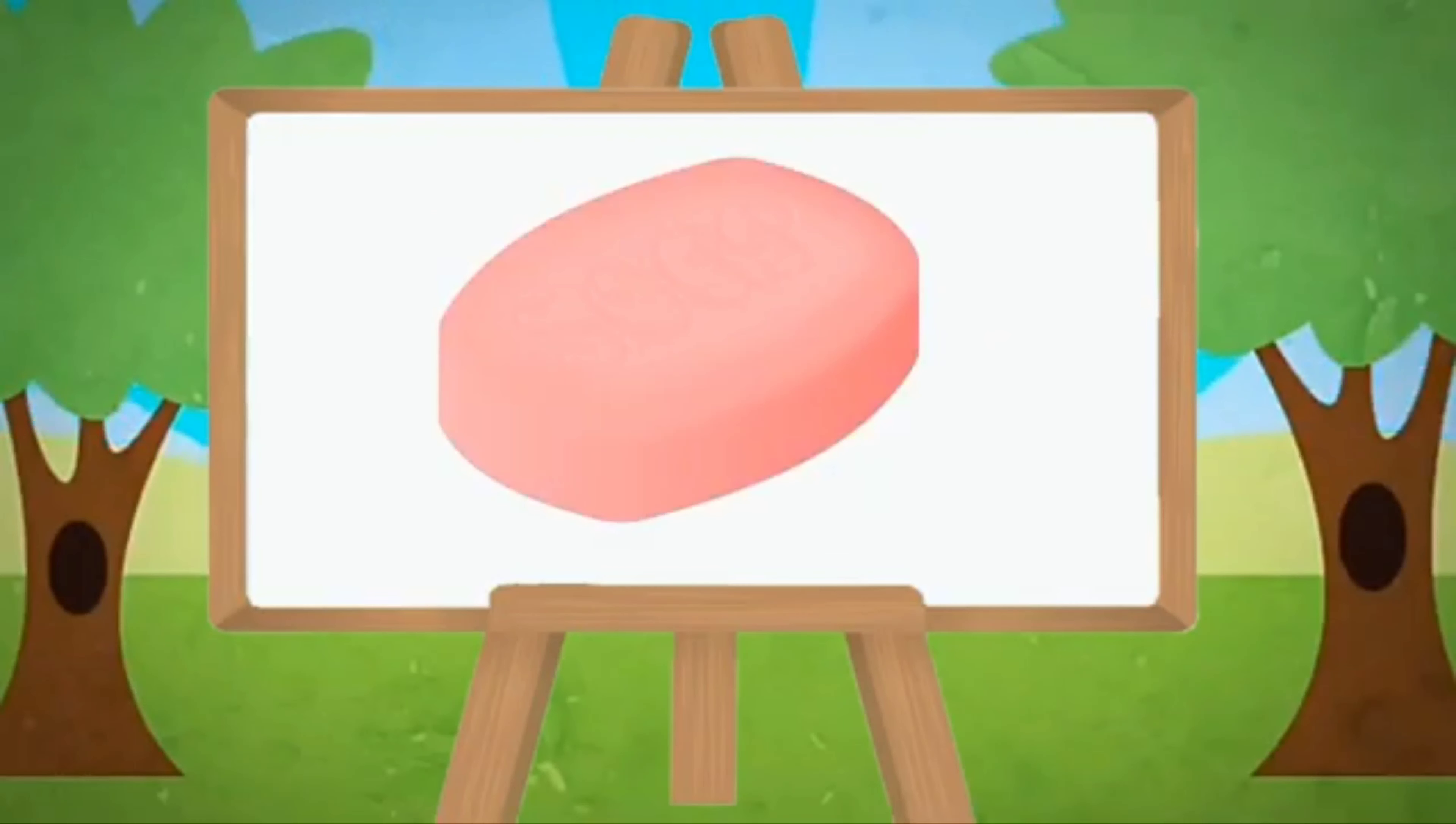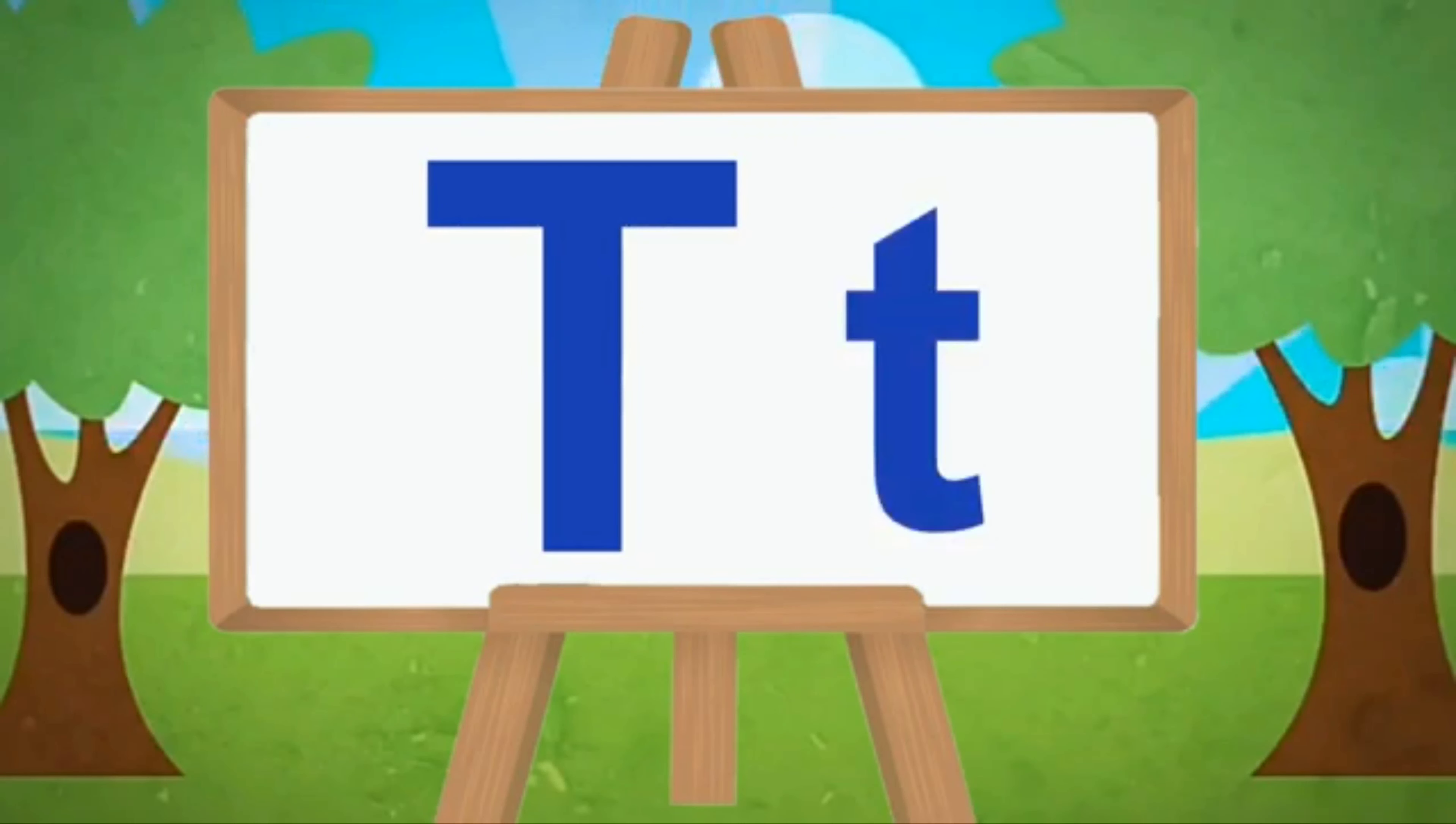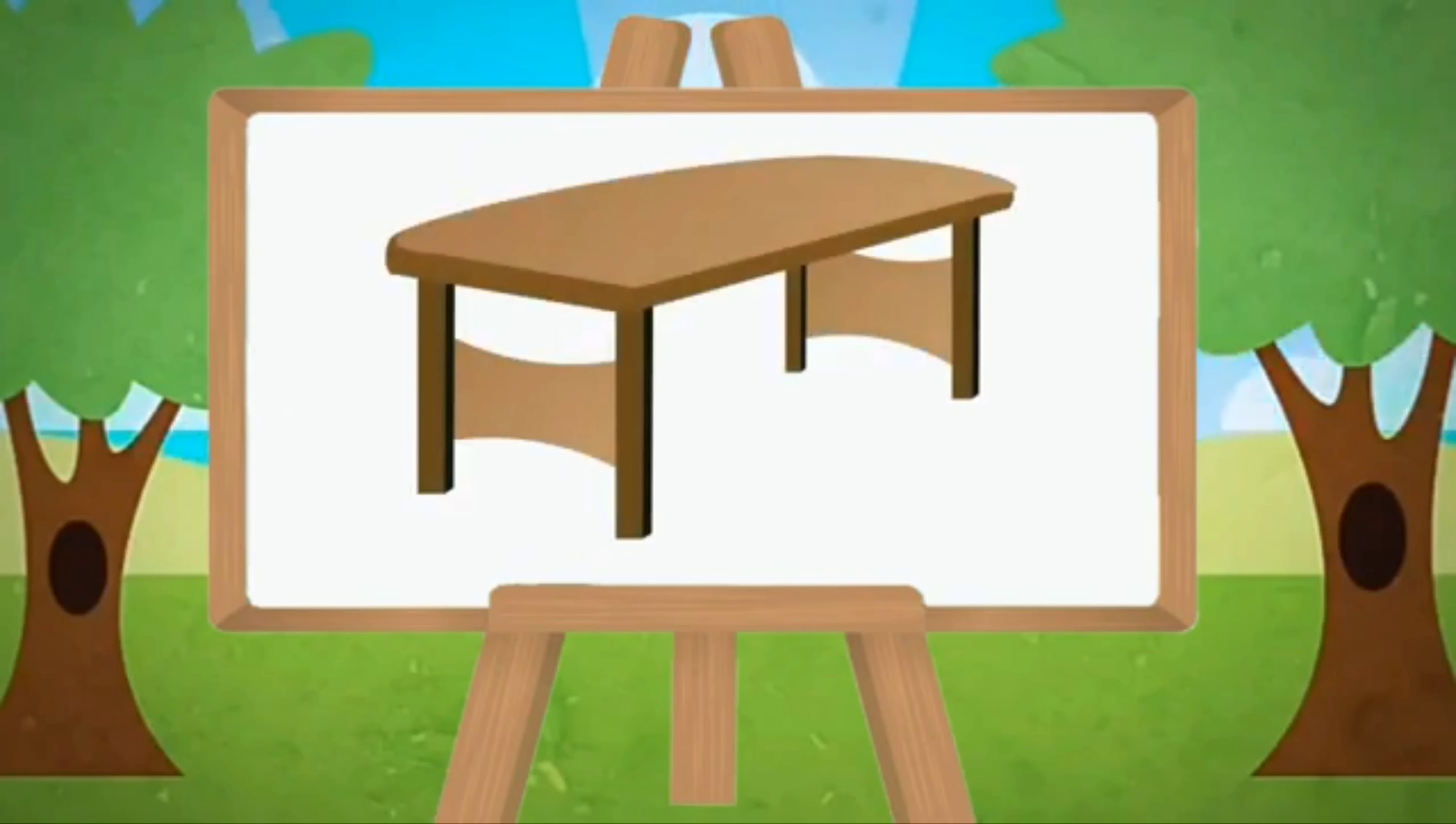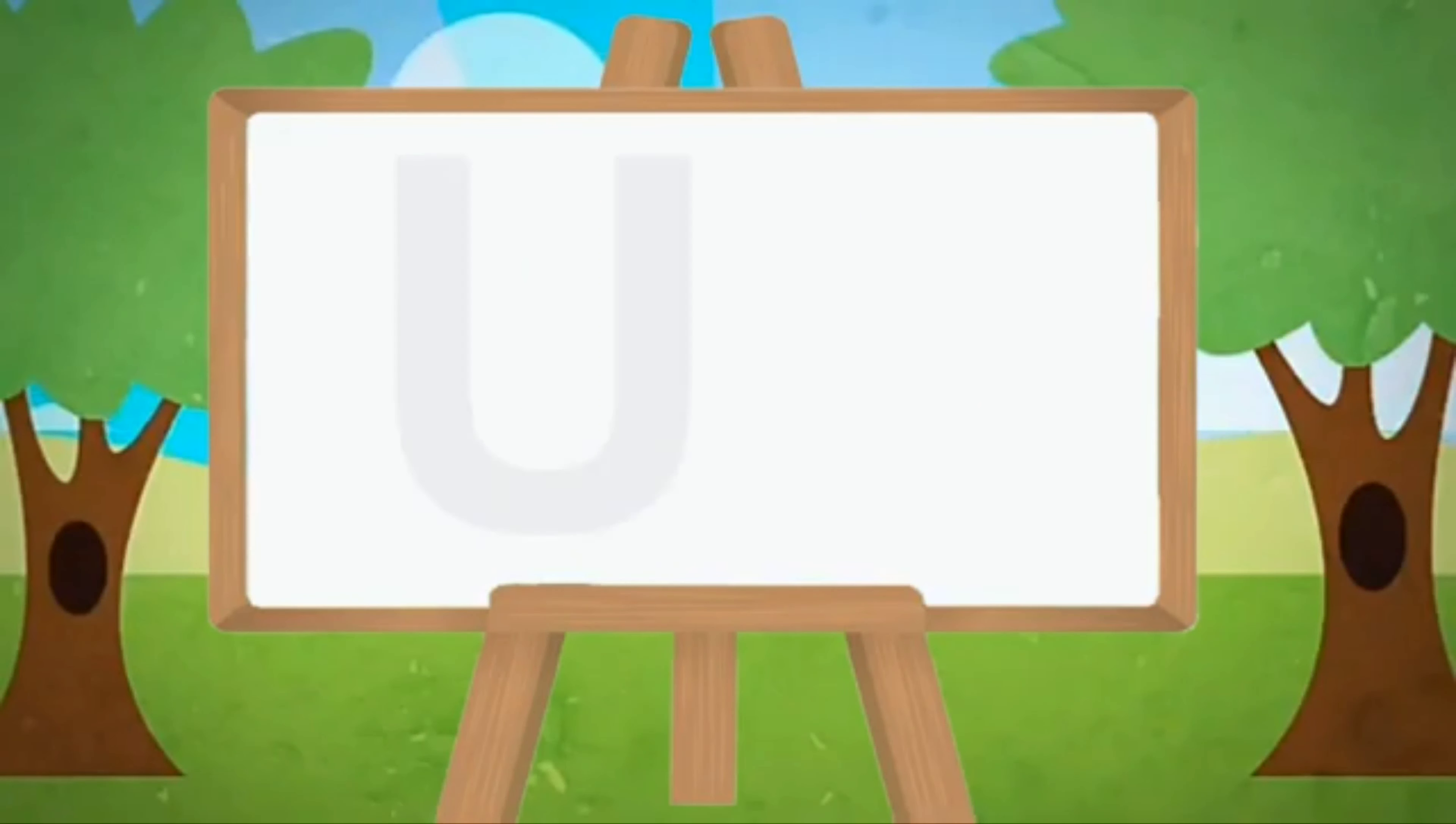Capital S, small s. S for soap, S for sunflower. Capital T, small t. T for table, T for tree.